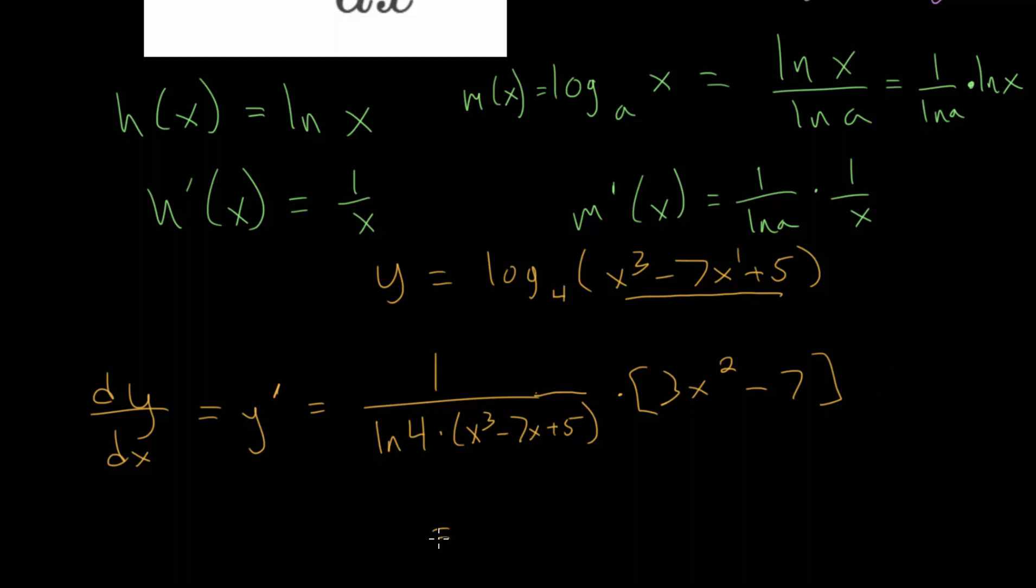And if we want, we can combine all this into just one simplified fraction, 3x squared minus 7, divided by the natural log of 4, multiplied by x cubed,